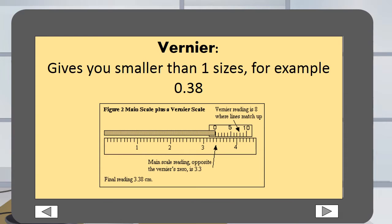Veneer, this gives you a smaller than one size, for example 0.38 as you can see on the diagram.